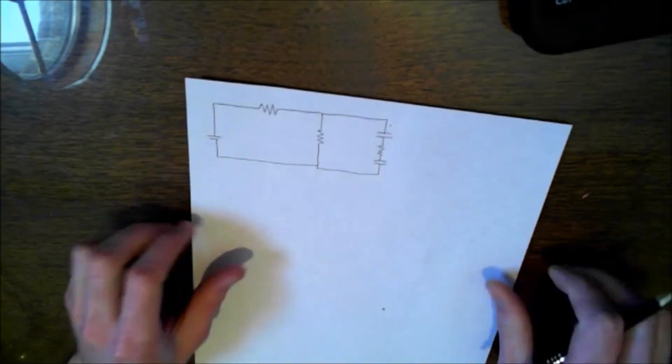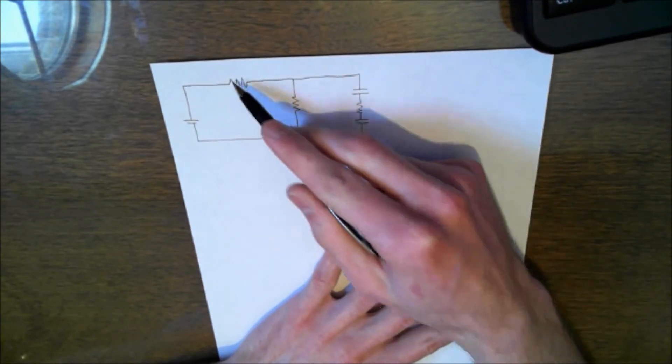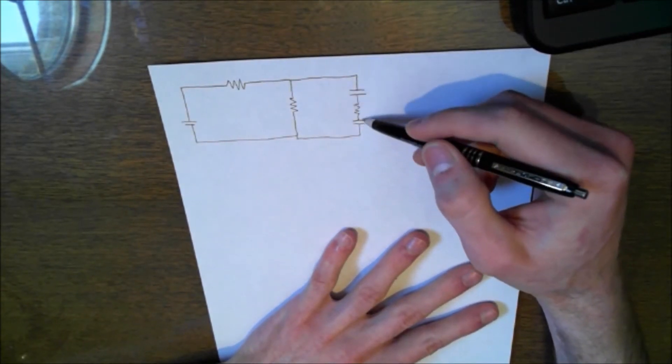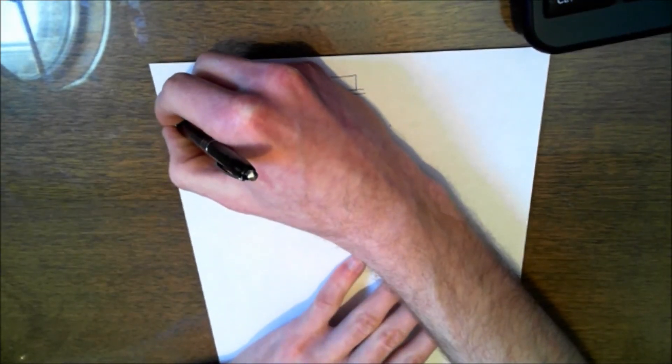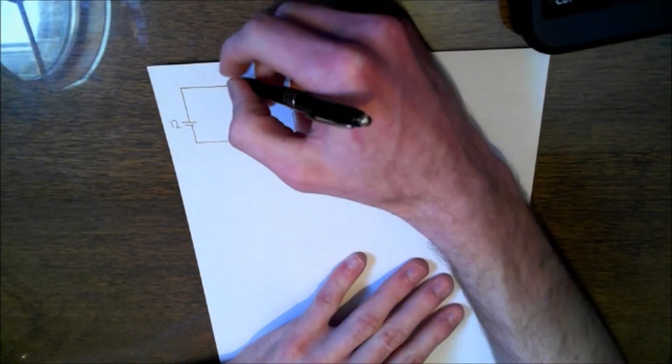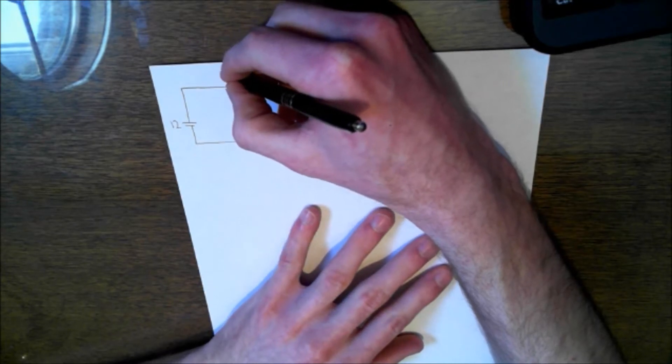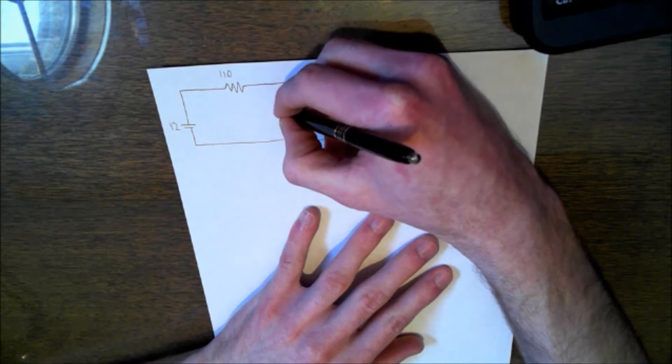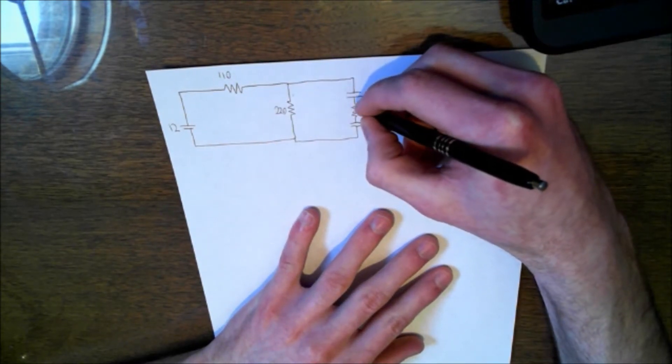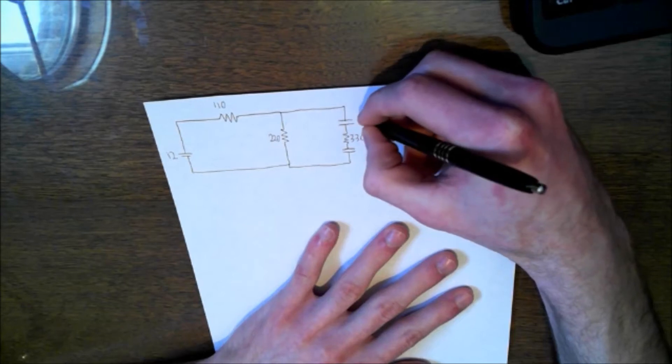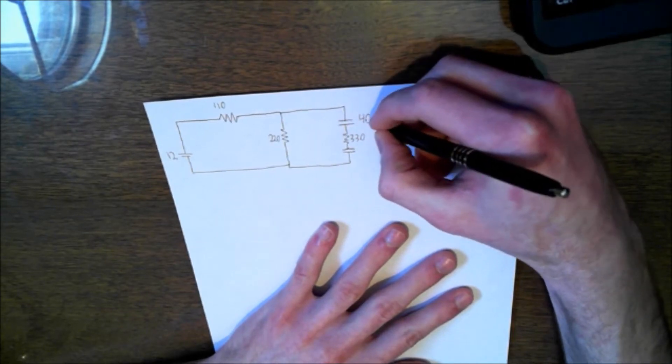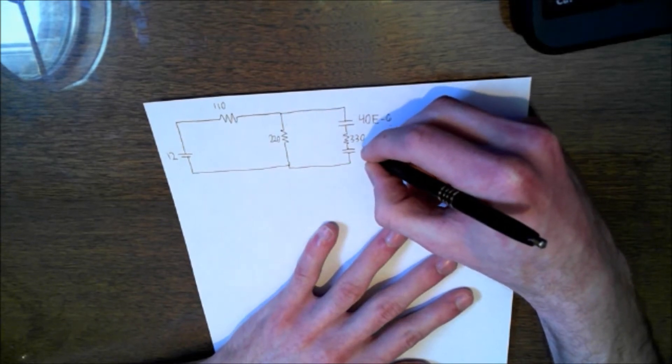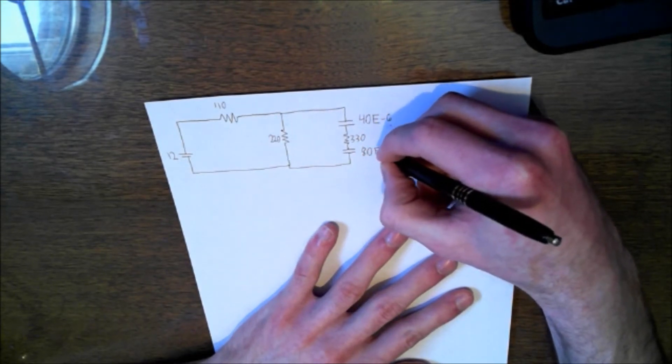Okay, so right here we got this circuit. And these three are resistors, and these two are capacitors. Here's a battery right over here. So this is going to be 12 volts, and this one here is going to be 110 ohms, and this guy here is going to be 220, and this one here is going to be 330. And then we have two capacitors, and this is going to be 40 microcoulombs, so that's 40E-6, and this one's going to be 80 microcoulombs, so that's 80E-6.